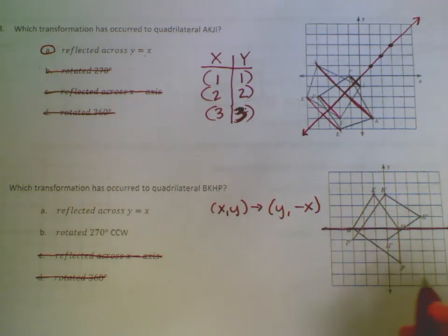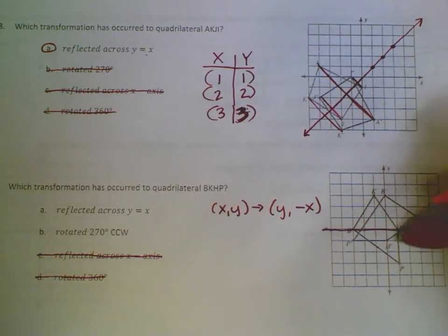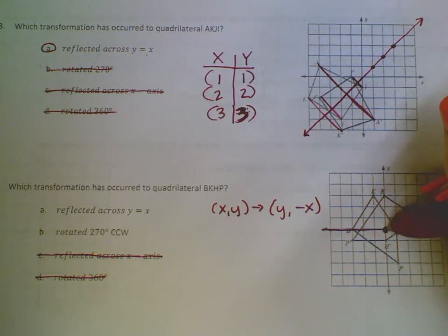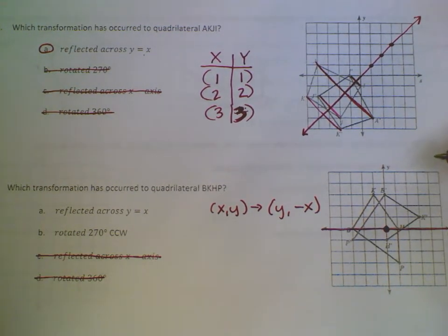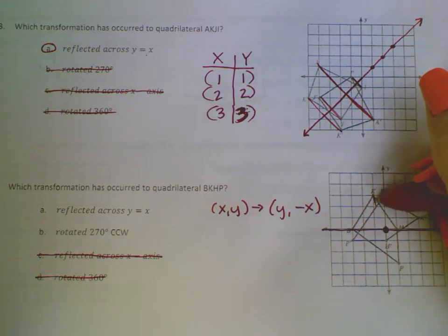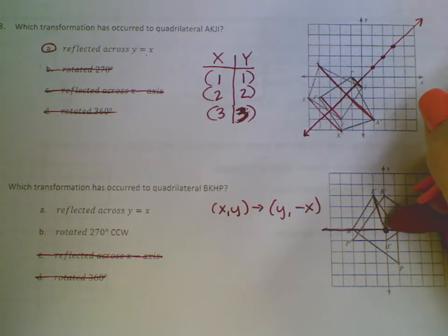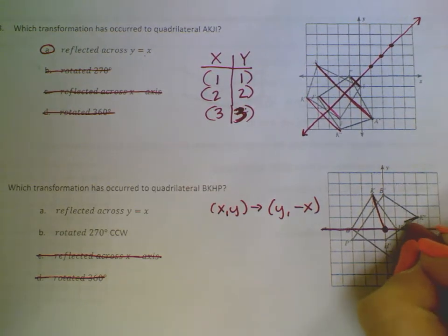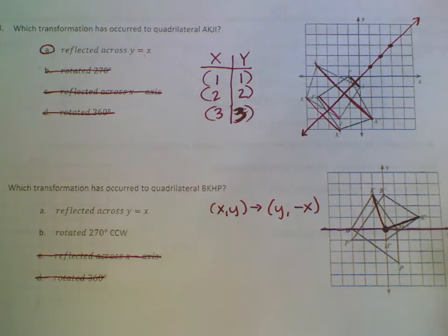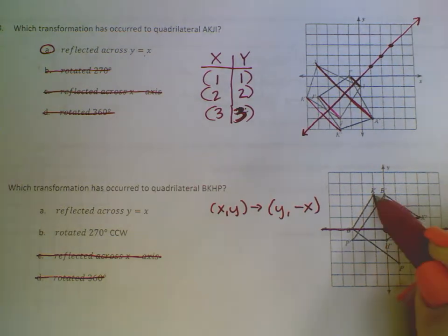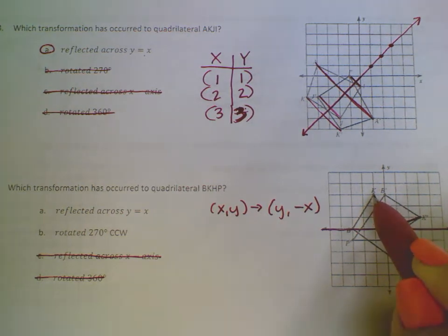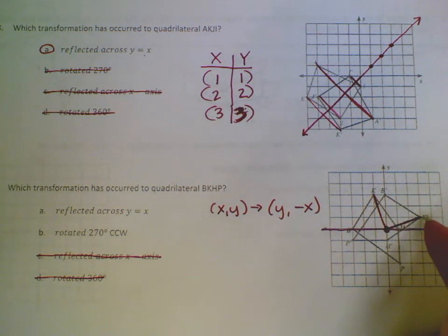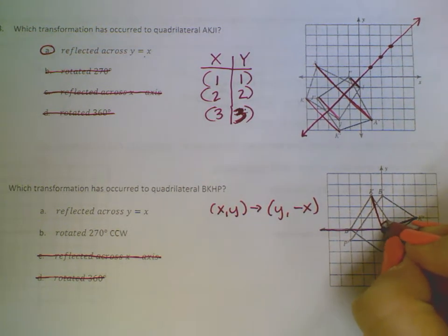Or what you could do is you could say, okay, I'm assuming that my point of rotation is going to be the origin because it wasn't stated otherwise. If I draw my line from K to the origin and K prime to the origin, it looks like 90 degrees if I were to go from here to here.